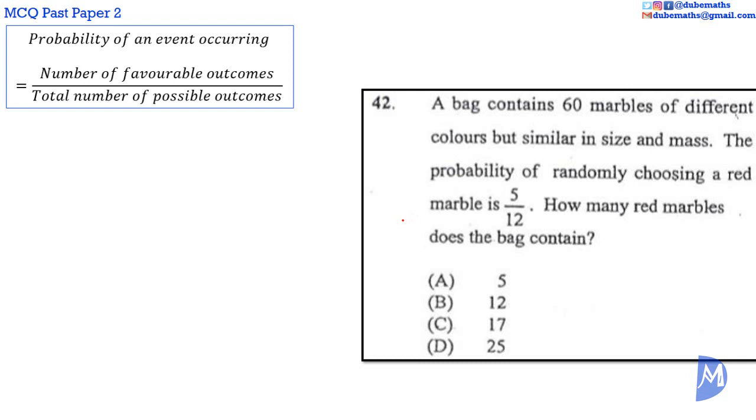The number of possible outcomes, number of different marbles we could have drawn, is equal to 60, the total number of marbles in the bag. We are asked to find the number of favorable outcomes, the number of red marbles.